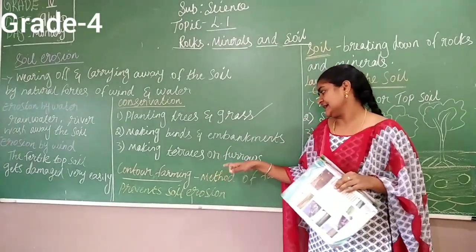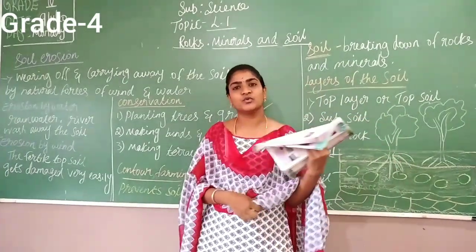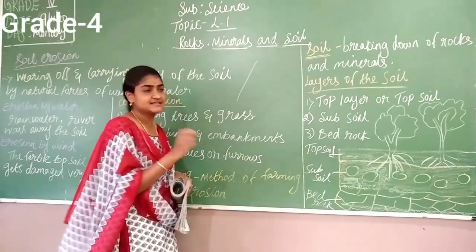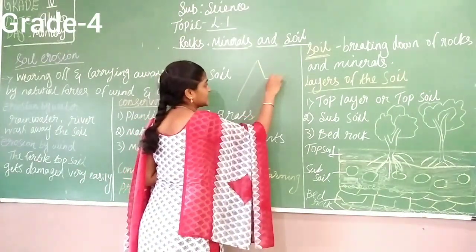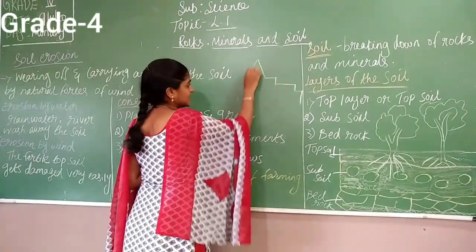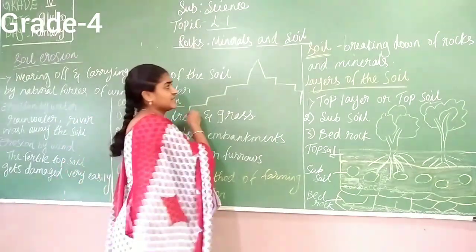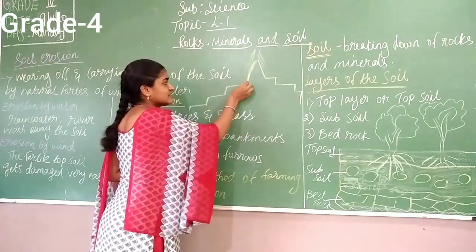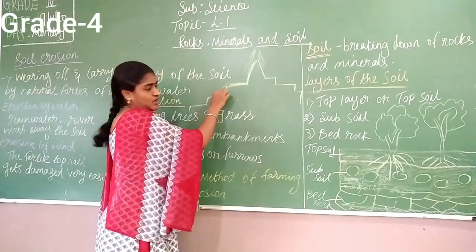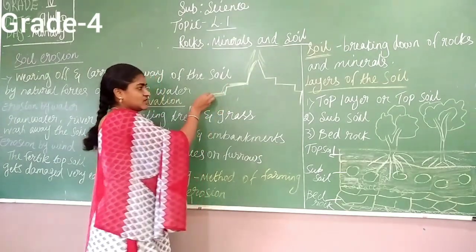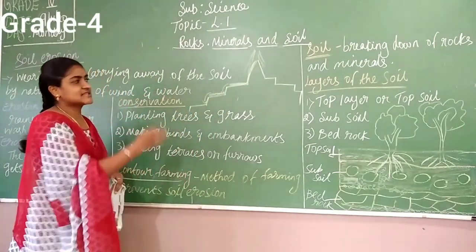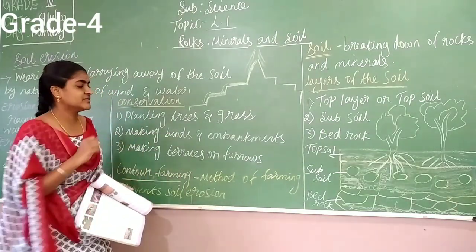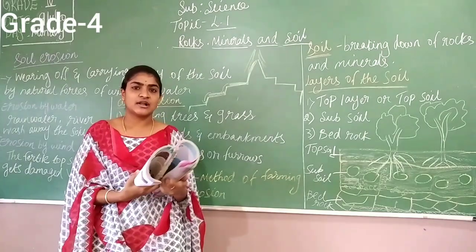Next is making terraces. In mountain areas, you can see how they do step-wise farming. Whenever heavy rain comes, whatever soil erodes at one step settles down on the next step; then only water comes down further. If any soil remains in the water, it settles at the next step. By doing step-wise terrace farming like this, we can avoid soil erosion completely. In these three ways — planting trees, making bunds and embankments, and terrace farming — we can control soil erosion. This is called soil conservation.